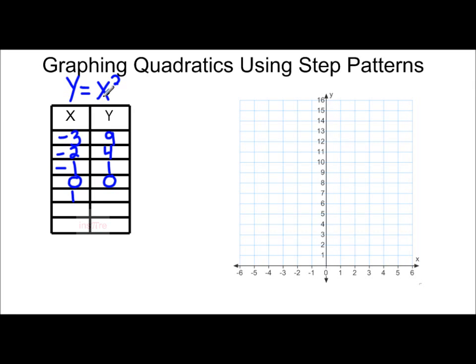If we put 1 in for x, we have 1 squared, which is 1 times 1, that gives us 1. When x equals 2, y is going to equal 2 squared, which is 4. And when x equals 3, y equals 3 squared, which is 9.